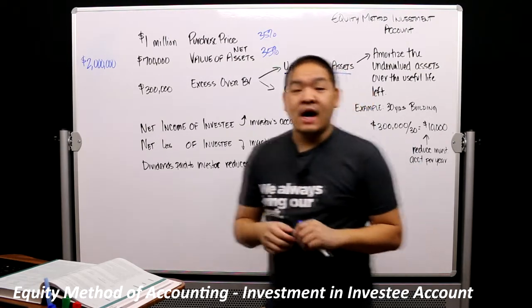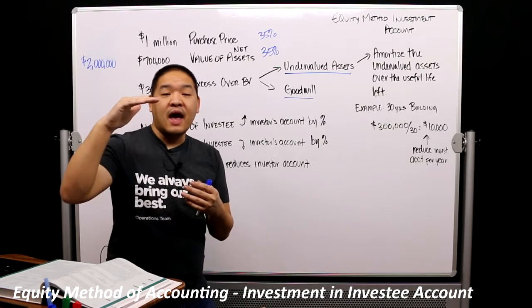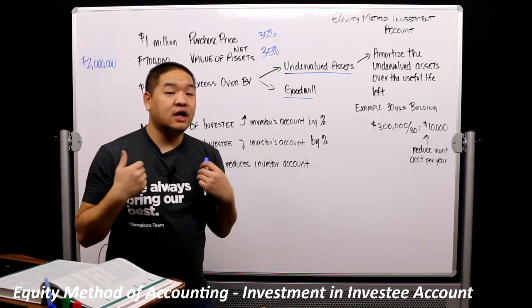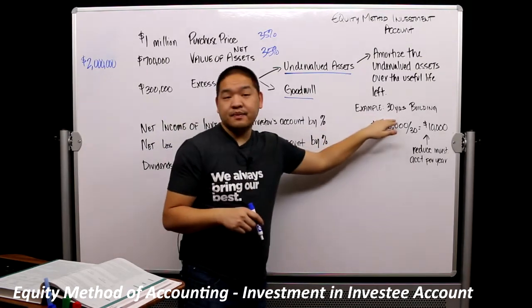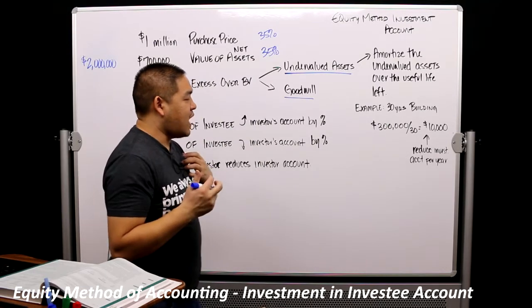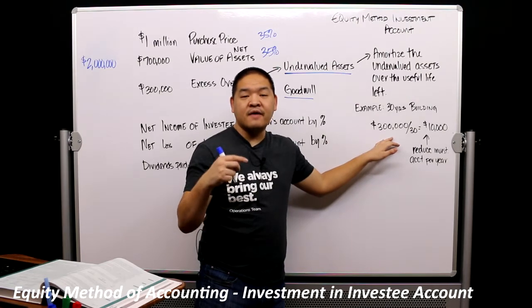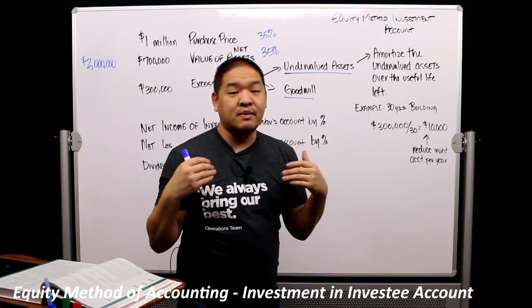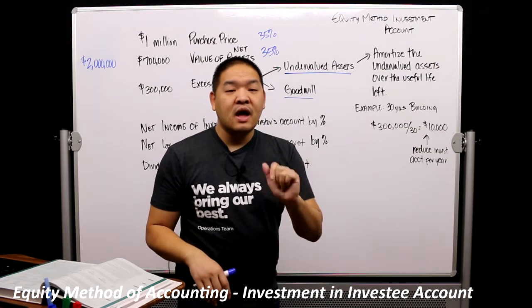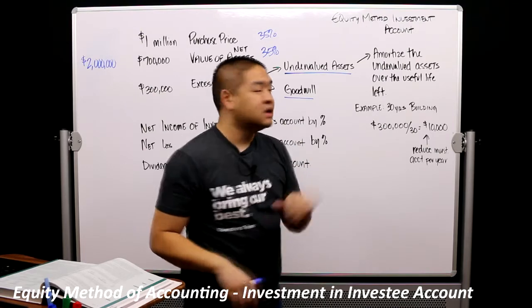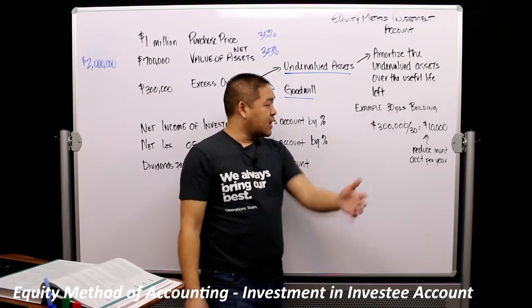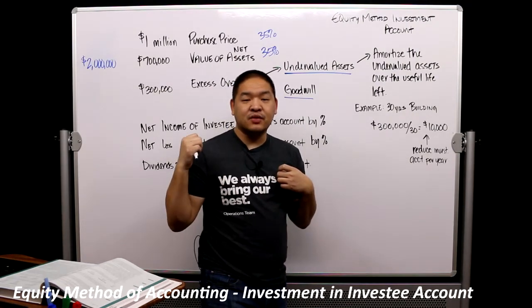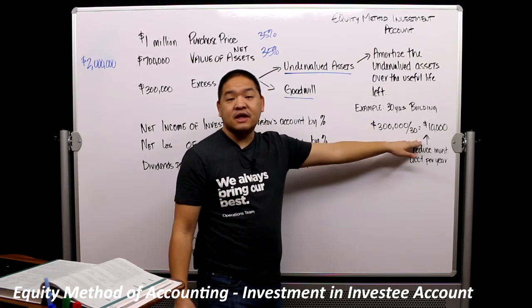Now, for the undervalued asset — let's assume that we have a building, and when we buy the company we find that the building is undervalued by $300,000. So we could allocate this $300,000 to the building, and if we do that, we're going to need to amortize our $300,000 based on the useful life of the building that's left. Let's assume the building had a 40-year life, but by the time we buy it there's only 30 years left. So we're going to take our extra $300,000 and amortize it over 30 years, which gives us $10,000 per year.